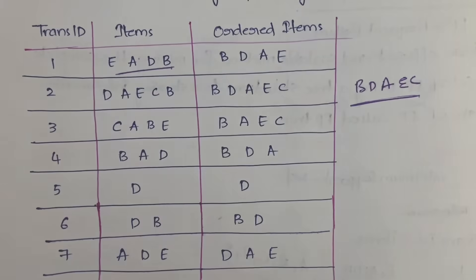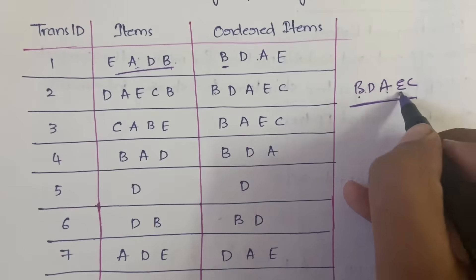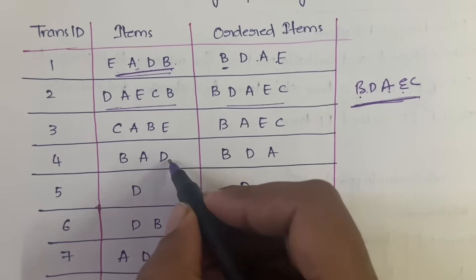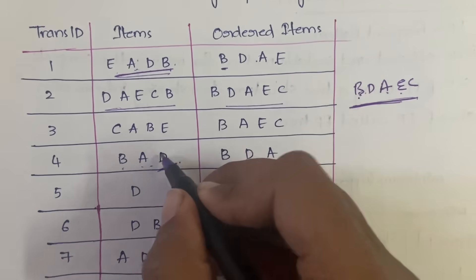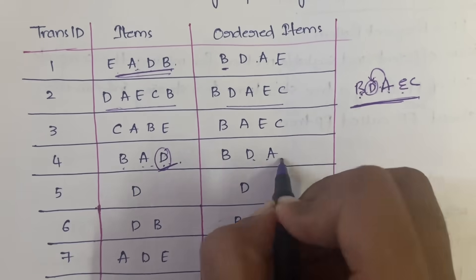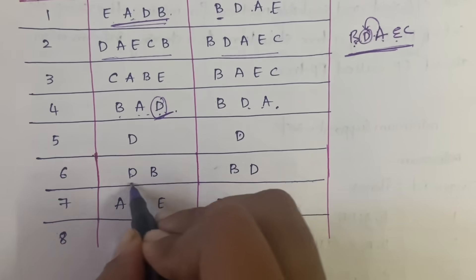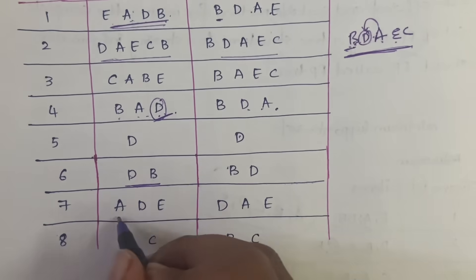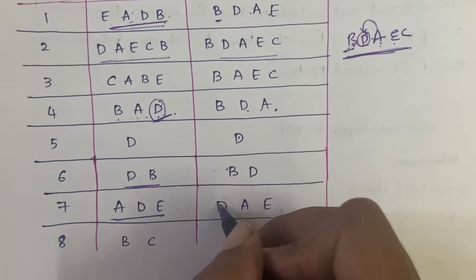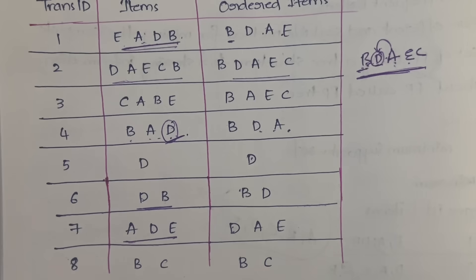According to the priority order B, D, A, E, C, we need to reorder the items given in the transactions in the question. For example, the fourth transaction has B, A, D — so first B, then D comes before A in priority, so it becomes B, D, A. Like that you have to reorder everything in the priority order. Then the task is to construct the FP Growth tree.